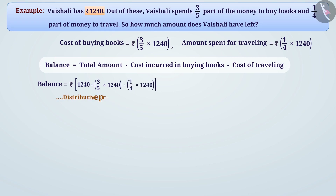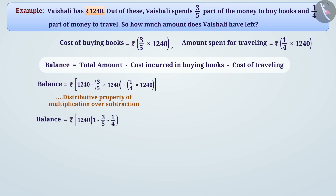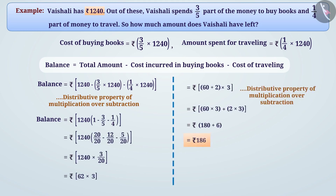From the distributive property of multiplication over subtraction, balance = 1240 × (1 − 3/5 − 1/4) rupees. Simplifying this, Vaishali has a total of 186 rupees left.